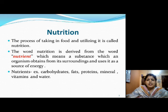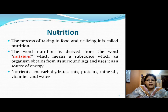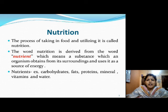The word nutrition is derived from the word nutrient, which means a substance which an organism obtains from the surroundings and uses as a source of energy. Nutrients can be carbohydrates, fats, proteins, minerals, vitamins and water, because all of these give us energy. So nutrients are what we obtain from the surroundings and use as a source of energy.